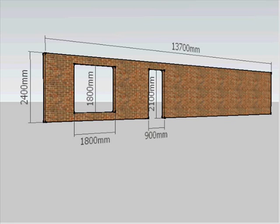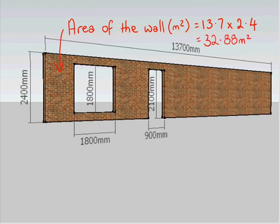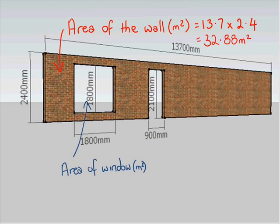First off, we'll look at the actual entire wall including the windows and doors. The area of this wall here is going to be 13.7 by 2.4, which equals 32.88 metres squared. Let's work out the area of the window that we have to get rid of. The area of the window is 1.8 by 1.8, which is going to be 3.24 metres squared. We're going to end up getting rid of that.